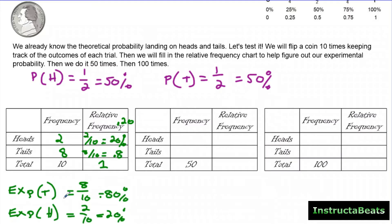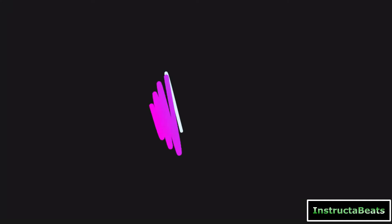Why is it not close to our theoretical probability? Because life isn't perfect — you can't always predict what's going to happen. We think that every time we flip it, there's a 50% chance it lands on tails. We did 10 flips and these are the experimental probabilities we got, and they don't match up with our theoretical probabilities. Let's keep going and go all the way to 50 flips.